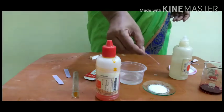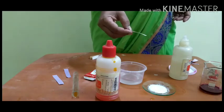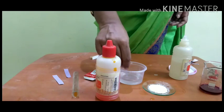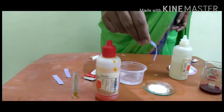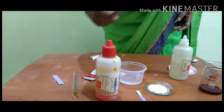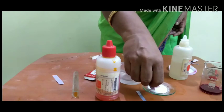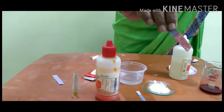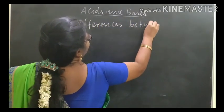Now we can see the differences between acids and bases. Red litmus paper dipped into sodium hydroxide solution turns blue in colour. Then take blue litmus paper and dip it in acid — it turns red in colour.